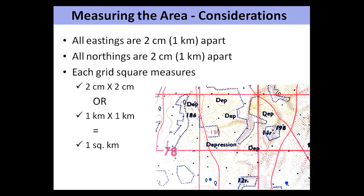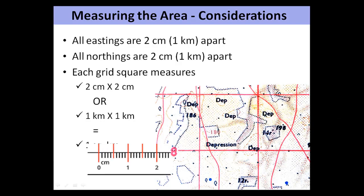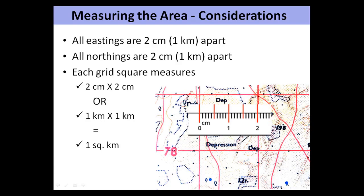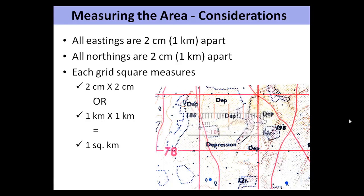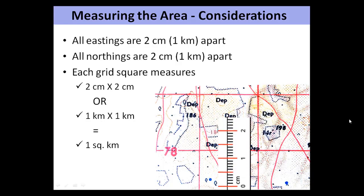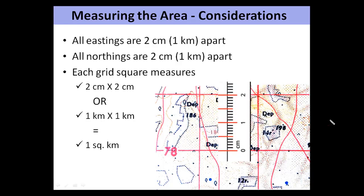How much a grid square measures can be further understood by using a ruler. If we bring a ruler between two eastings, it measures 20 mm × 20 mm. From one easting to the other towards the east-north direction, it measures 2 cm or 20 mm. Similarly, a ruler between two northings also measures 2 cm or 20 mm towards the north direction.